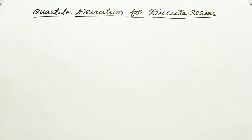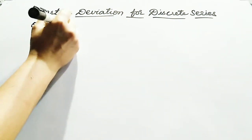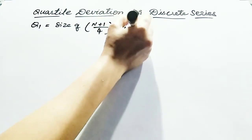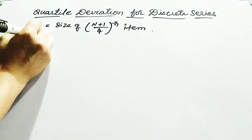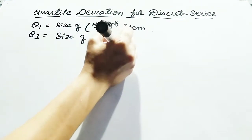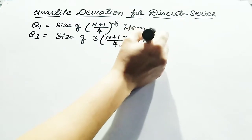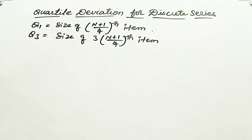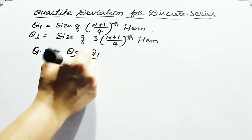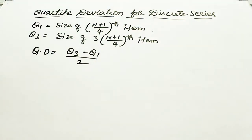How do you find quartile deviation for discrete series? You have to remember the formula. Q1 is equal to the size of the (n+1)/4th item, and Q3 is the size of the 3(n+1)/4th item. The formula is the same for individual series and discrete series. The formula for quartile deviation is Q3 minus Q1 divided by 2.